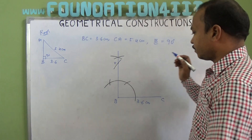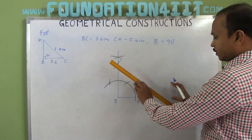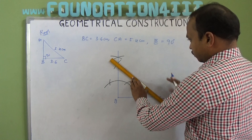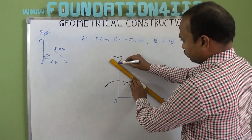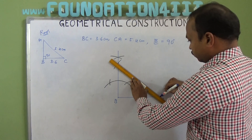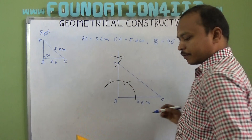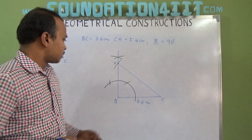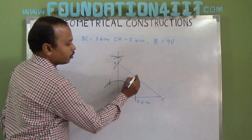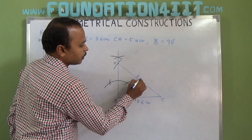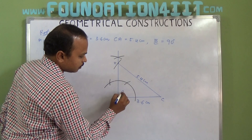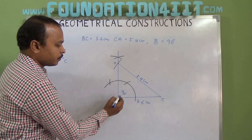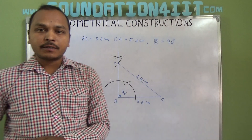Now join A and C. The distance from A to C is exactly as given — that is 5.4 centimeters. And angle B is exactly 90 degrees.